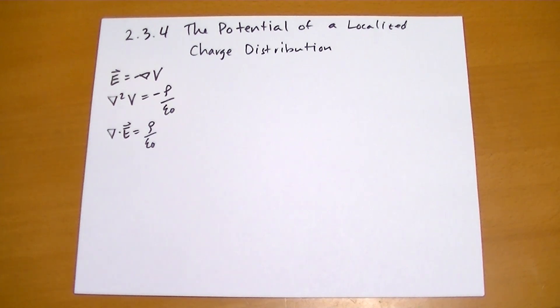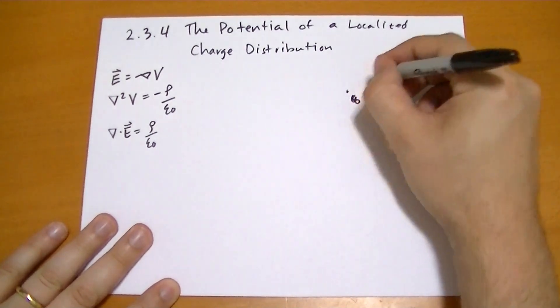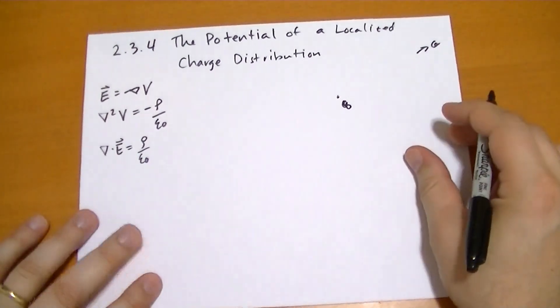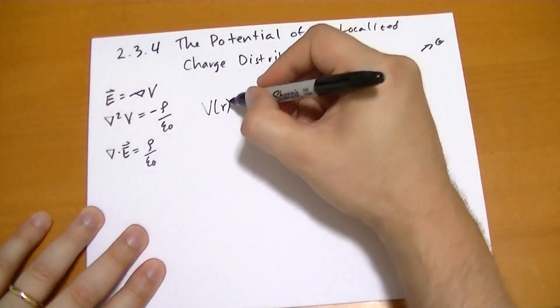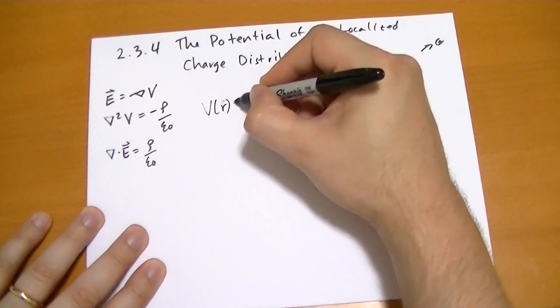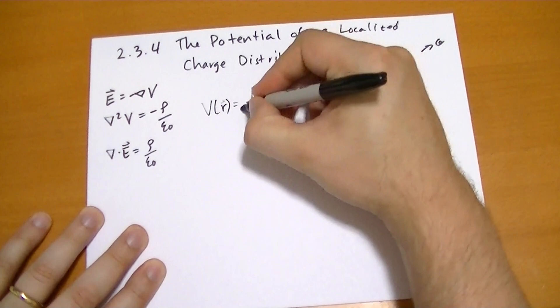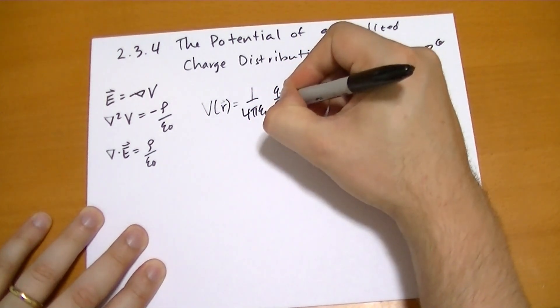So if we start with a point charge Q, and we think the reference point O is out there at infinity, then we found earlier that the potential at any point in space is given by the rather simple formula 1 over 4 pi epsilon naught Q over R.